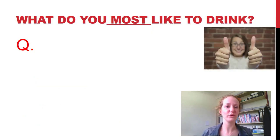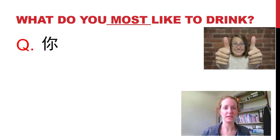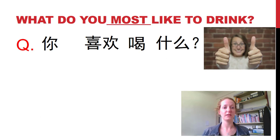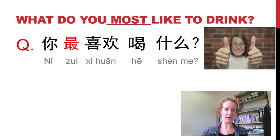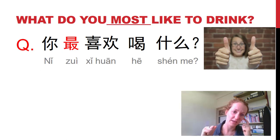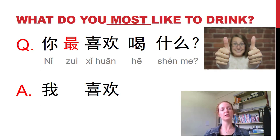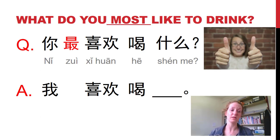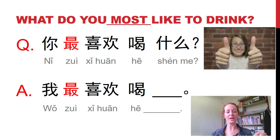Now we get to the grammar. What do you most like to drink? How do we say 'what do you like to drink?' — 你喜欢喝什么? To say 'most like to drink,' we put the adverb 最 before 喜欢. So 你最喜欢喝什么? To answer: we said 我喜欢喝 and put in the blank where the question word was. So 我最喜欢喝 something. For example, 我最喜欢喝水. Can you write down a sentence of what you most like to drink?